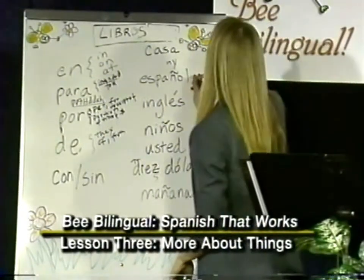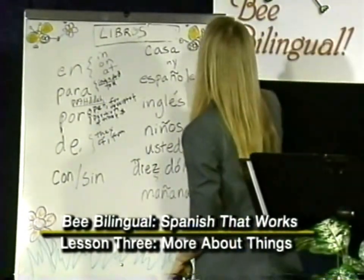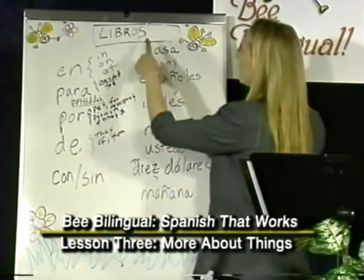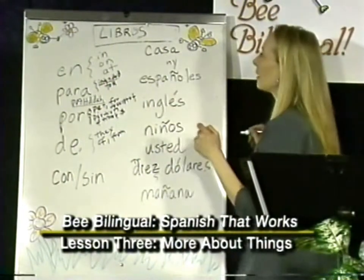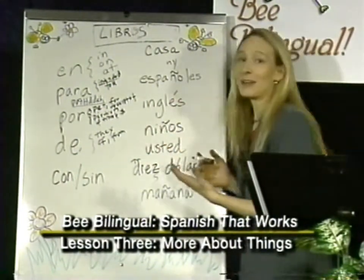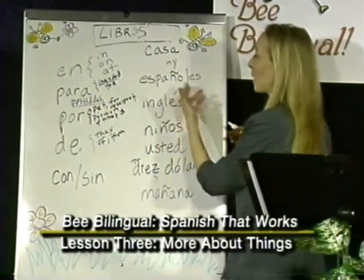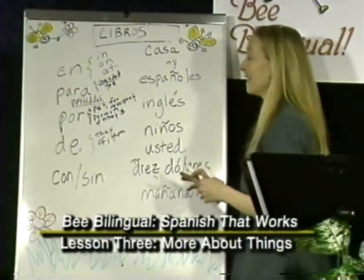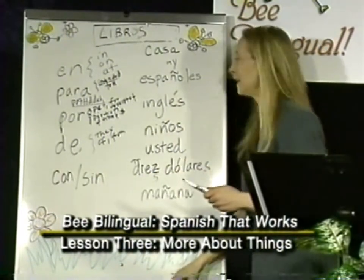For example, if I tried to put 'español' here to make it match, then I would say 'books of Spaniards,' because 'españoles' can mean Spaniards — and that's not what I mean.